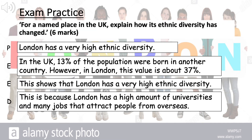This is a good example of an exam question that you might expect for your learning: for a named place in the UK, explain how its ethnic diversity has changed. What they're looking for is AO1 and AO2 — knowledge and understanding. What you need to give them is that data, and then be able to develop on it. I've given you an example here of an exemplar PEED paragraph, so have a look at this. Then I'd like you to have another go at another PEED paragraph, maybe using that data about how the white British ethnicity has changed in London.